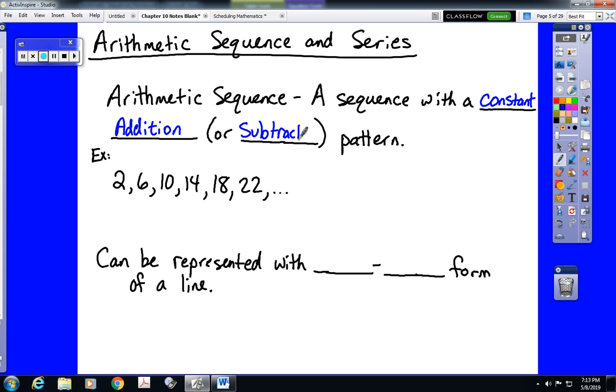Keep in mind that subtraction is just addition of a negative number. So if we have a constant subtraction pattern, that will also fit the bill. If we look at our example here, we are adding 4 each time. That is a constant addition pattern, so we could say that this was an arithmetic sequence.